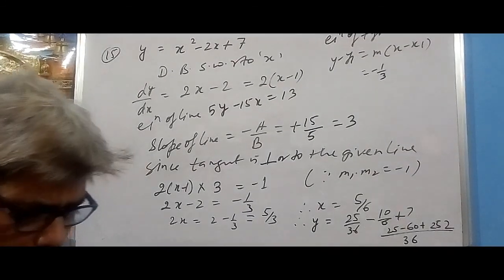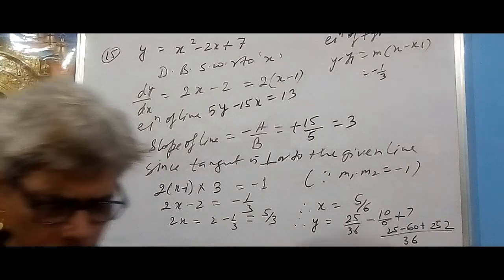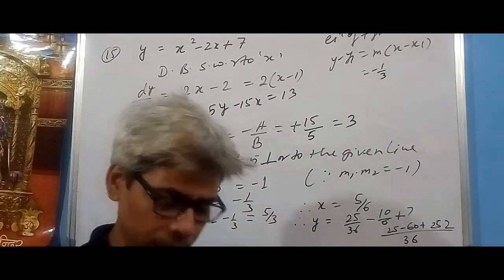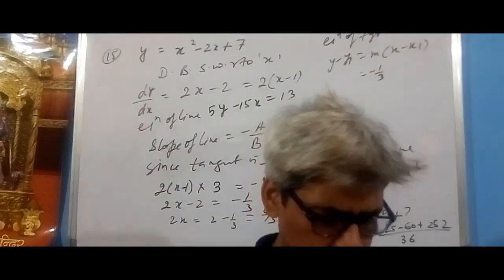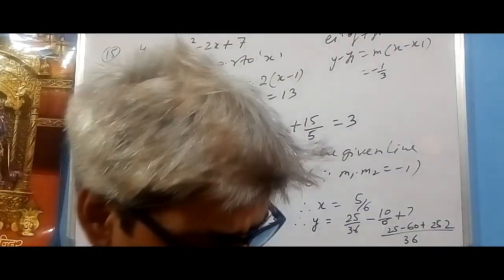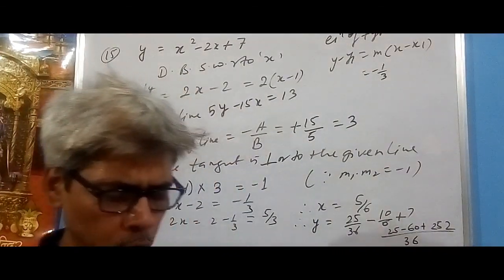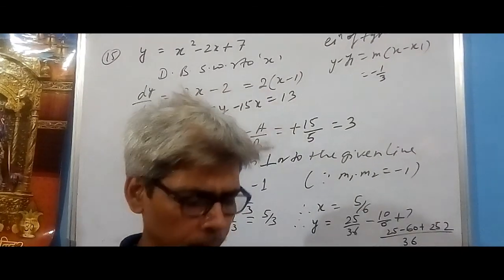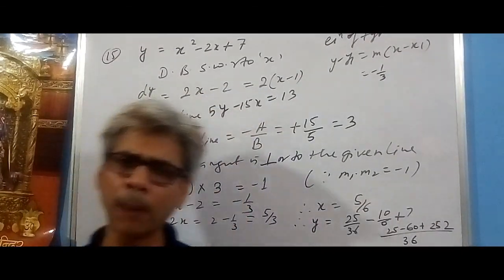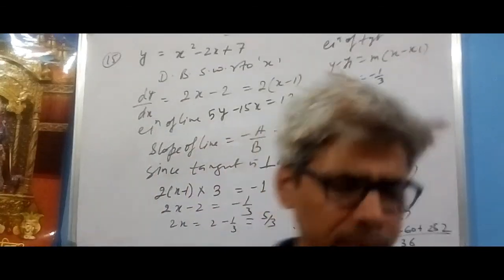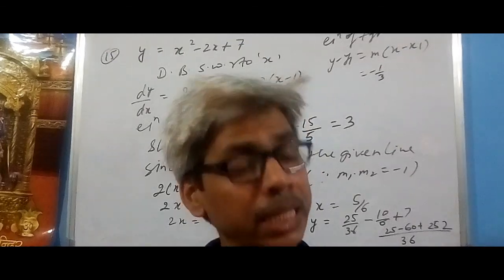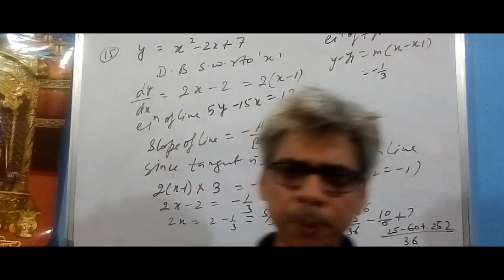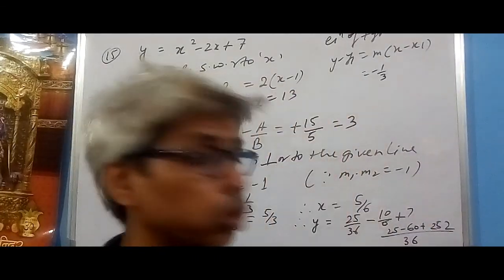So that covers questions up to 15 and 16 should also be manageable. For question 16, y is given — find dy/dx, substitute one value of x to get m1, and substitute another value of x to get m2. To check if they are parallel, m1 should equal m2. In this way, I've covered more than 50% of exercise 6.3 and given hints for the rest.